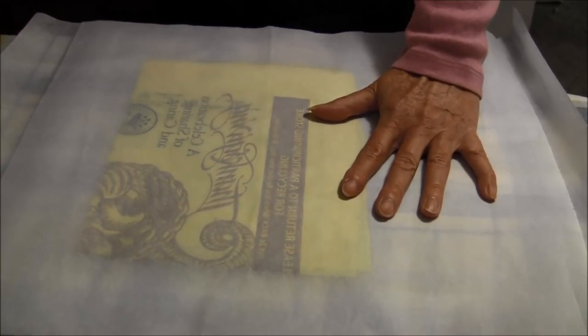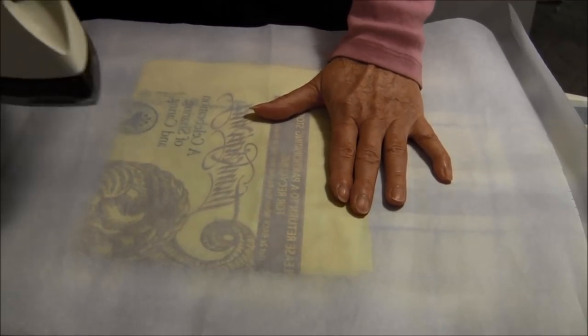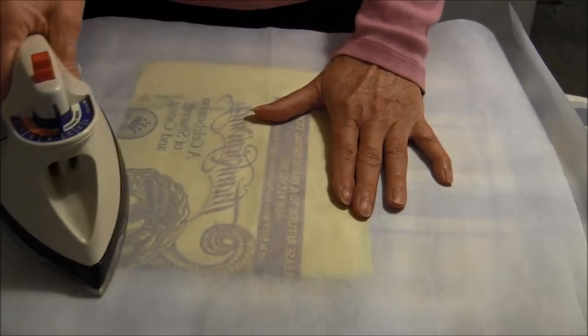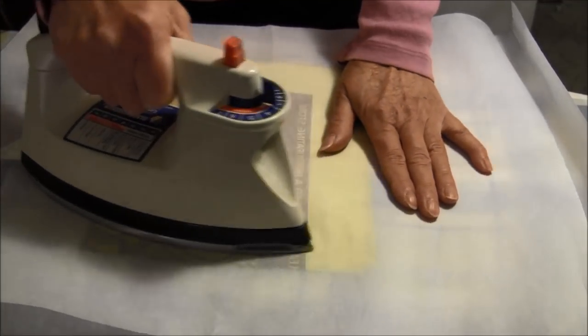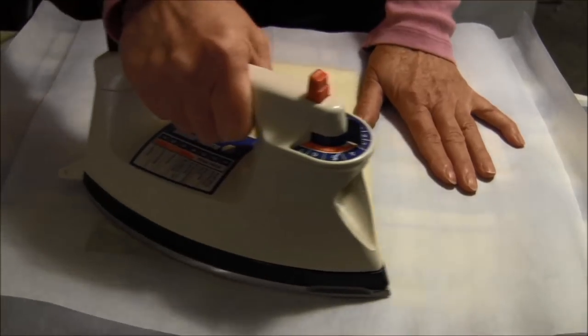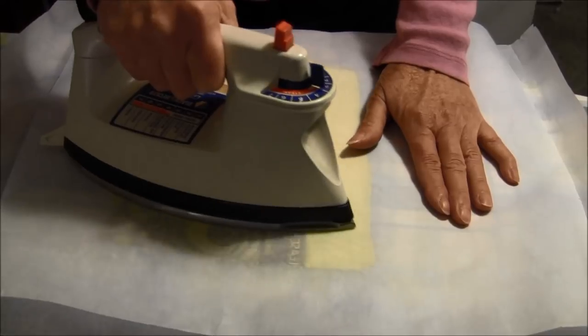Your iron should be set on a rayon polyester setting and now all you're going to do is you're going to start to iron it. You need to keep the iron moving as you're doing it, ironing each section for about 10 to 15 seconds.